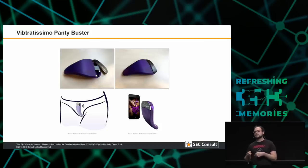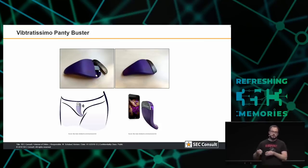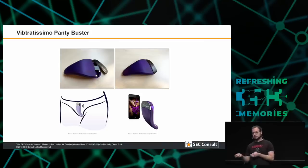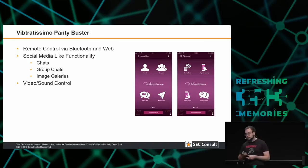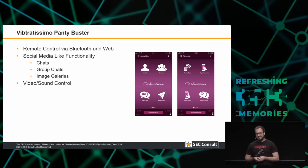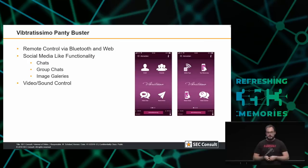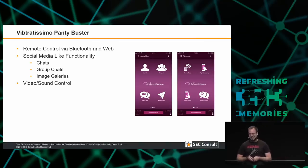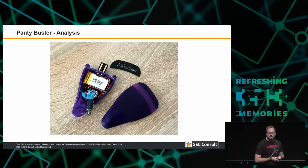The Panty Buster is just one product out of a whole product line — I bought it because it was the cheapest. They all use the same backends and the same iOS and Android apps. The Panty Buster is connected via Bluetooth to a smartphone and can be used, for example, for long-distance relationships. But there is way more behind those apps — there's a whole social media network built in: group chats, image galleries, and friends lists.